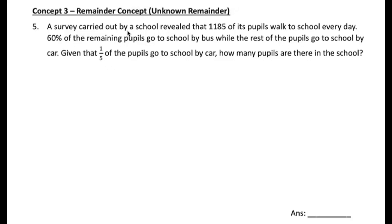Let's start. A survey carried out by a school revealed that 1,185 of its pupils walk to school every day. 60% of the remaining pupils go to school by bus, while the rest go to school by car. See the word 'remaining'? It's a very clear indication — this is a remainder theory concept, and therefore we must draw a model.